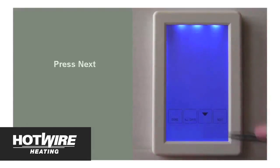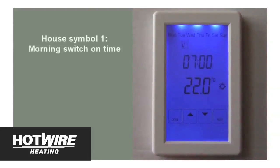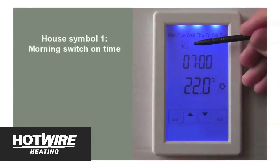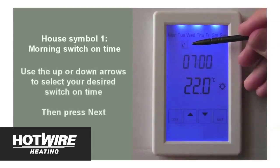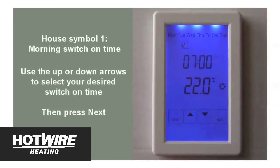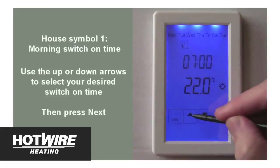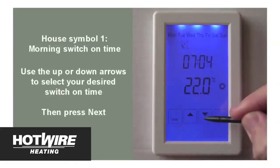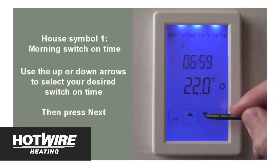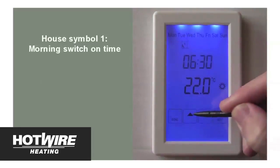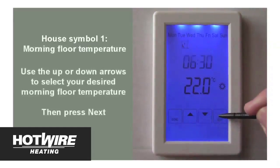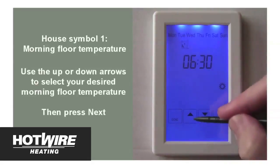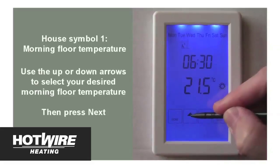The house symbol with a number 1 and a person inside will show at the top of the display. This is your floor's morning switch on time. Use the up or down arrow to select what time you would like your floors to warm up. In this case we will choose 6.30 in the morning. Then press next to move onto your desired floor temperature. In this case we will choose 23 degrees. Then press next.